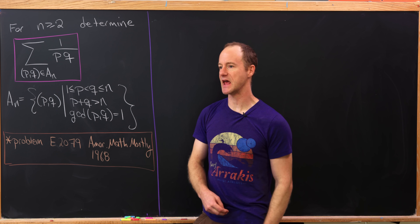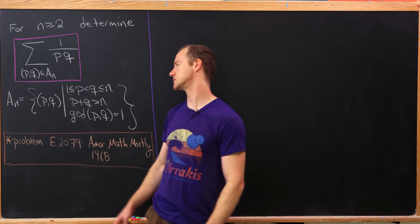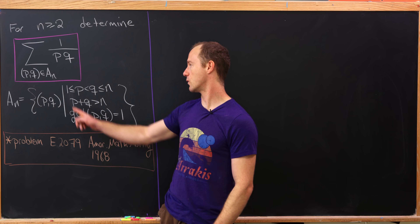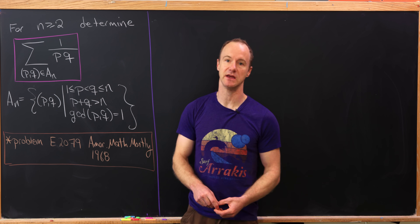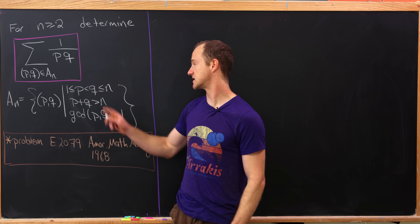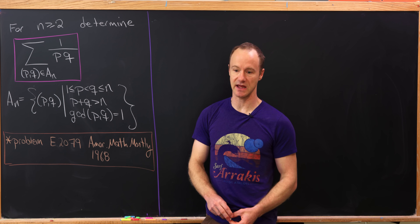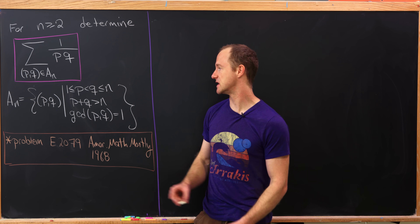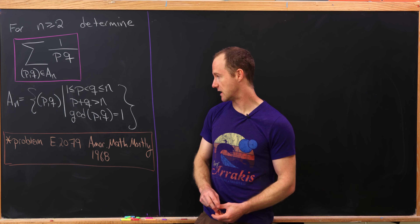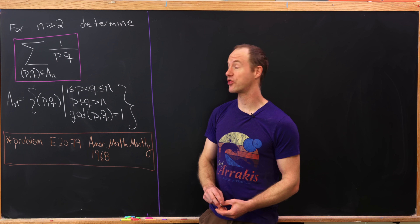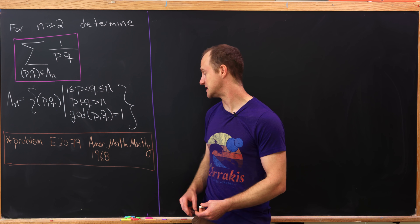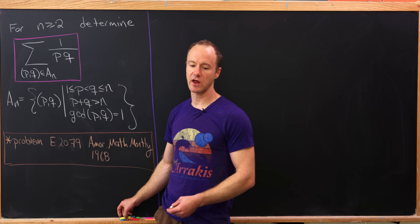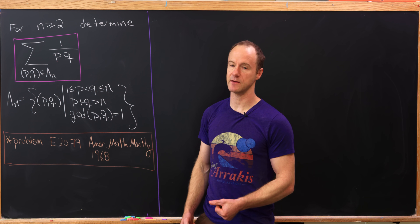You might ask, what is that set A_n? It's defined as follows: all ordered pairs (p, q) such that 1 ≤ p < q ≤ n. The second condition is that p plus q is bigger than n. And finally, the third condition is that the gcd of p and q equals 1, so in other words, they're relatively prime.